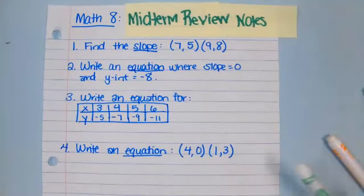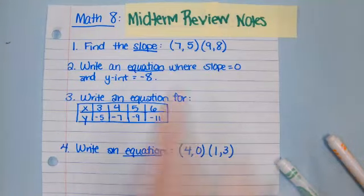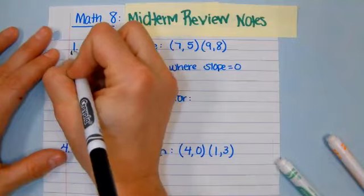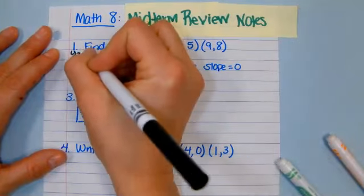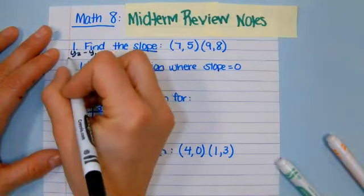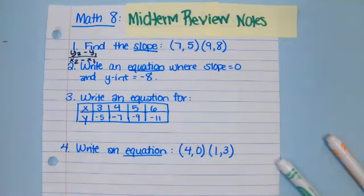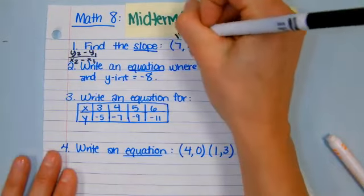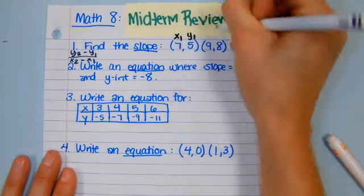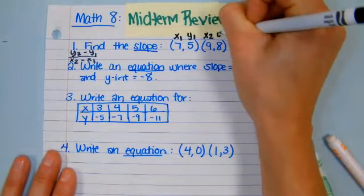What is the formula for finding slope? y2 minus y1 over x2 minus x1. Perfect. This is the formula we have to use for ordered pairs. If we have a graph, we could use rise over run, but we don't. All right, so our labels here are x1, y1, x2, y2.